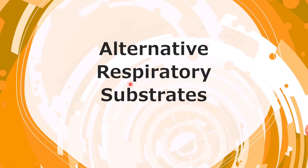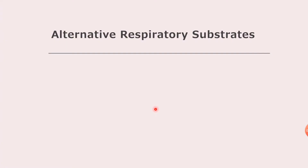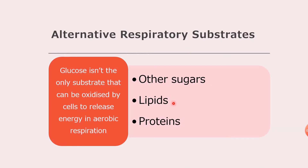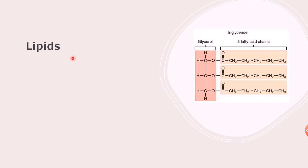Today's video is on alternative respiratory substrates. Glucose isn't the only substrate that can be oxidized by cells to release energy in aerobic respiration. We can in fact use other sugars, lipids, and proteins. Other sugars can simply be converted into glucose or into a form that glucose takes during aerobic respiration, whereas lipids and proteins are a bit more complicated.